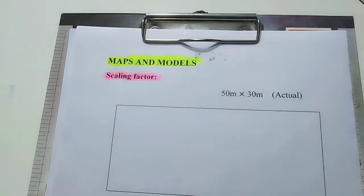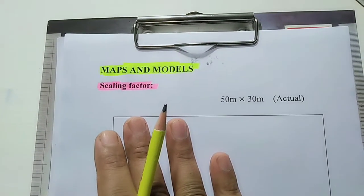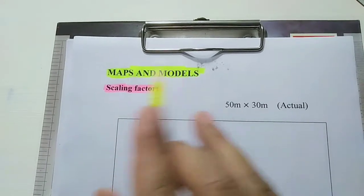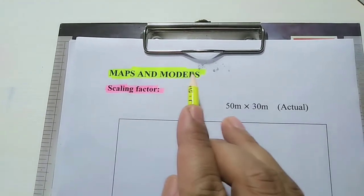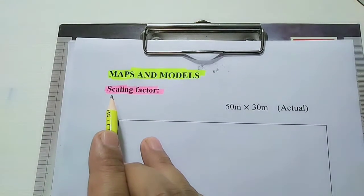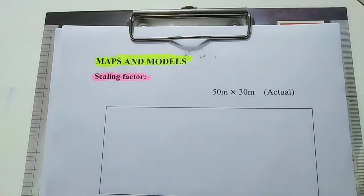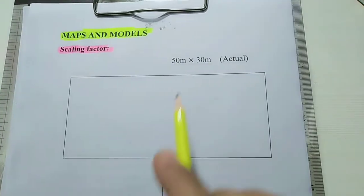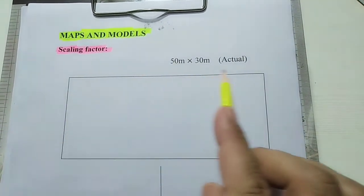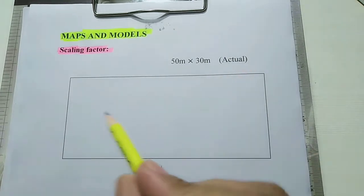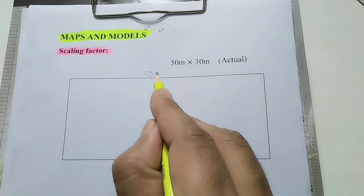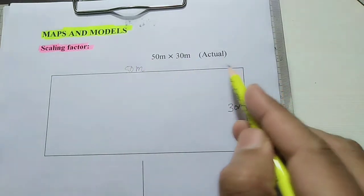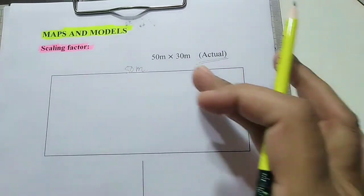Hello everyone, welcome to this video. This is part of the similarity of triangles series. In this video we are going to study maps and models. To understand maps and models, first you need to understand scaling factor. Suppose you have a plot whose dimension is 50 meters by 30 meters — its length is 50 meters and the breadth is 30 meters. This is the actual dimension of your plot.